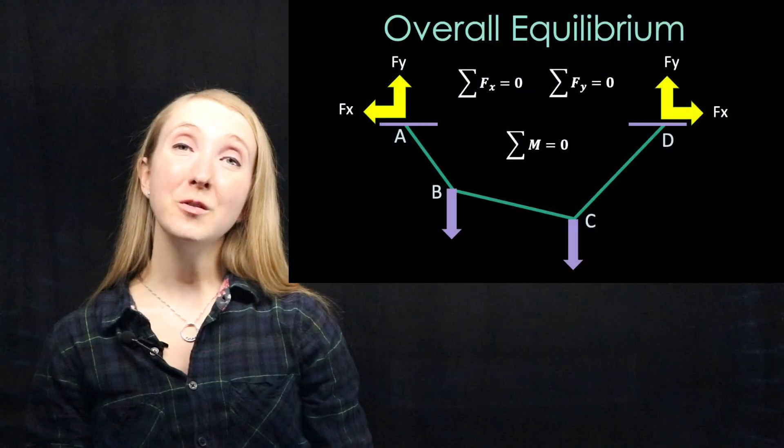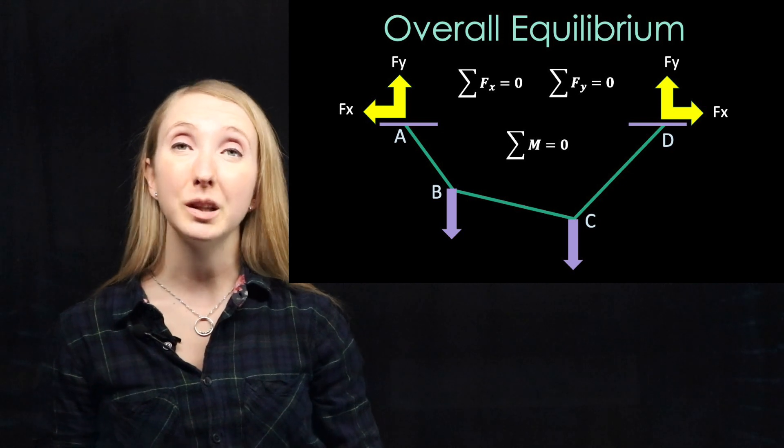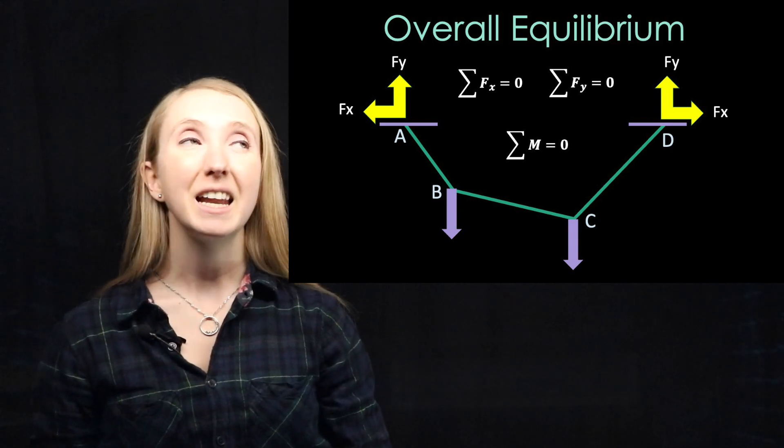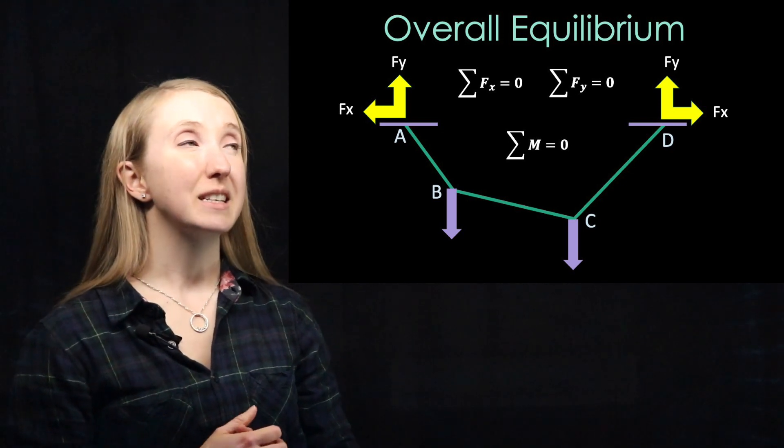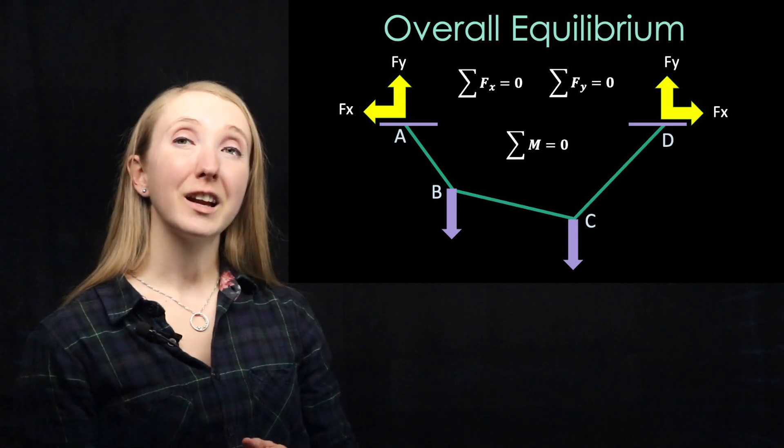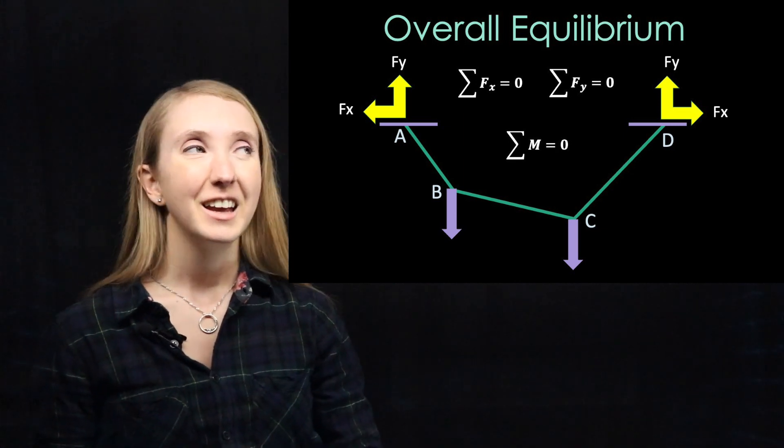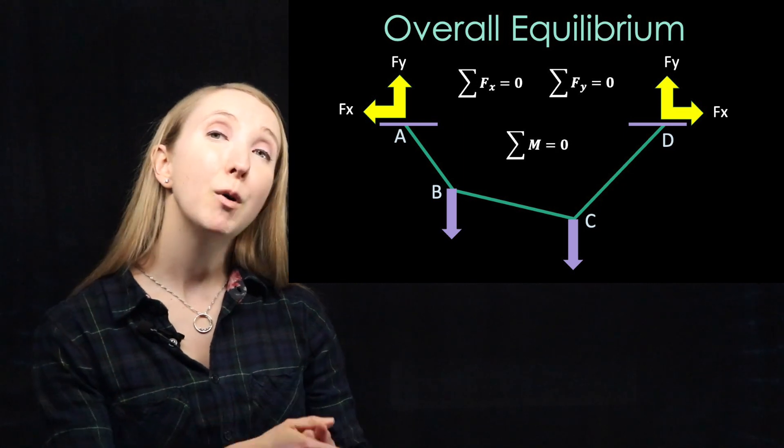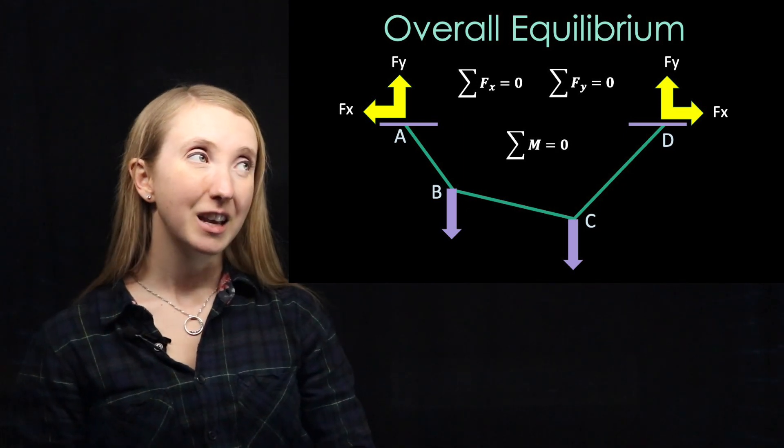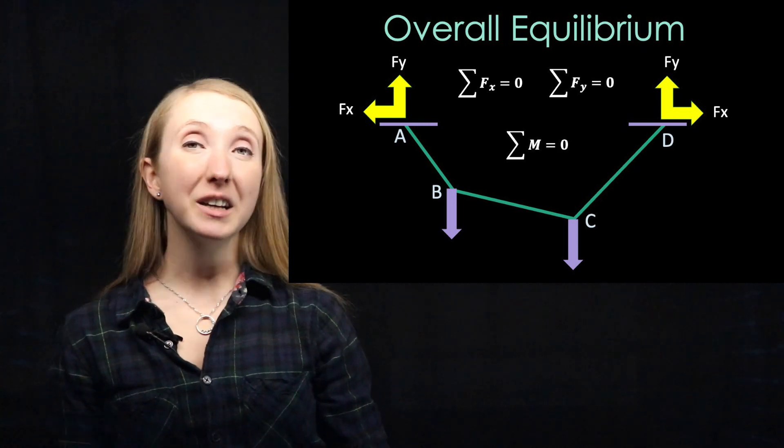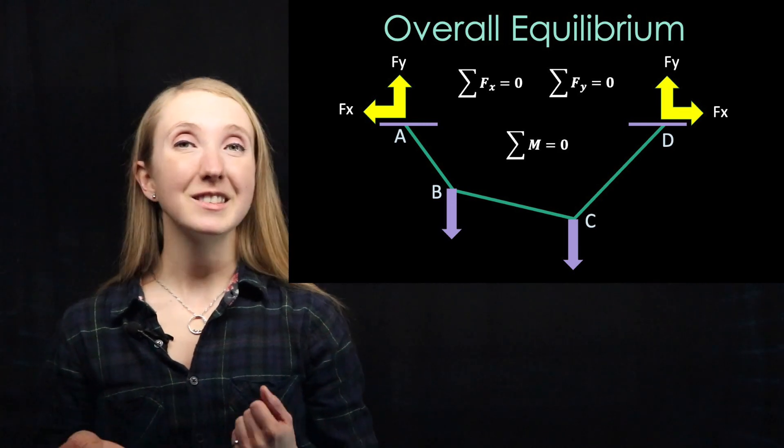The overall cable system is always in equilibrium. That means that if you take the sum of the forces in the x direction or in the y direction, it will always equal zero. There's also no net moment on the cable system. So you can take the moment about any point on your cable system and it will equal zero.